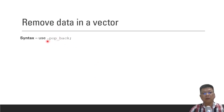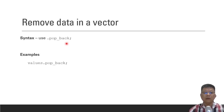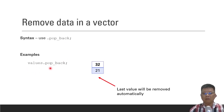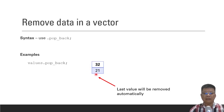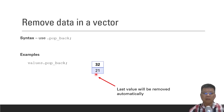When we want to remove data, we use .pop_back. You don't have to specify the value — the vector itself will remove the particular value and reduce its size as well. For example, values.pop_back will remove one value. Previously we had 32, 21, and 10. After .pop_back, it will remove 10 — the last value is removed automatically. Basically, a vector is good because its size can be extended or reduced at any time.